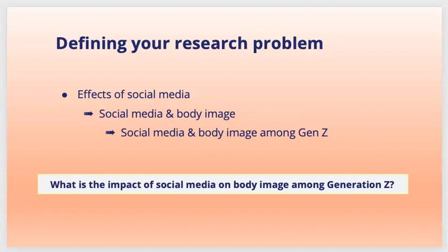Defining a research problem is a major step. If the literature review is a standalone assignment, developing a clearly defined focus will be your first step. This involves narrowing down your topic to a clearly defined research problem and associated question. For example, using social media and body image — specifically social media and body image among Generation X — the research question could be: what is the impact of social media on body image among Generation X?